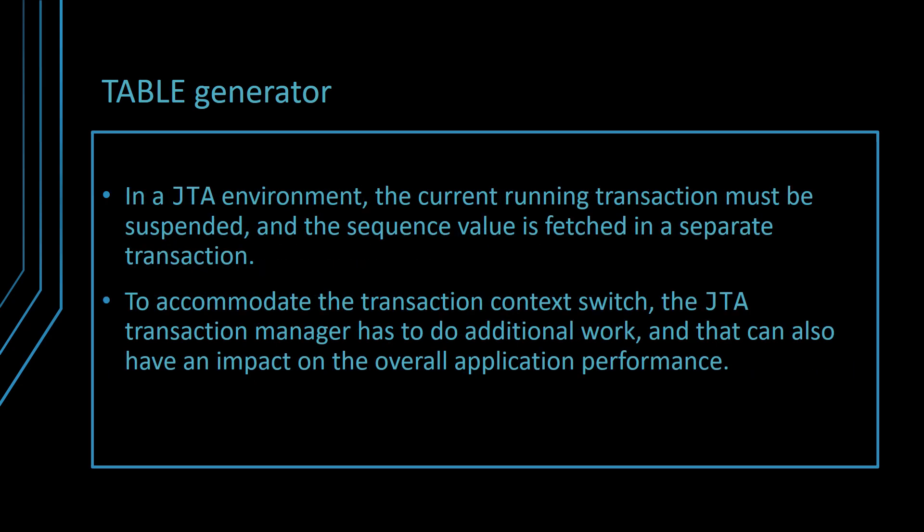In a JTA environment, the current running transaction must be suspended and the sequence value is fetched in a separate transaction. The calling transaction is resumed after the new sequence value is acquired. For most JDBC drivers, it's not possible to multiplex multiple transactions on the same physical database connection. So most often, even if the calling transaction is suspended, the new transaction will still require a new database connection from the pool. Therefore, to accommodate the transaction context switch, the JTA transaction manager has to do additional work, which can have an impact on the overall application performance.